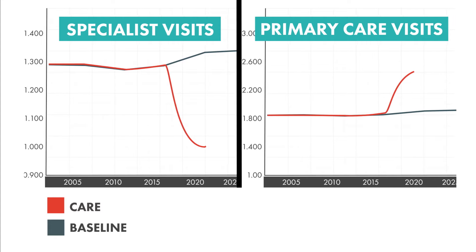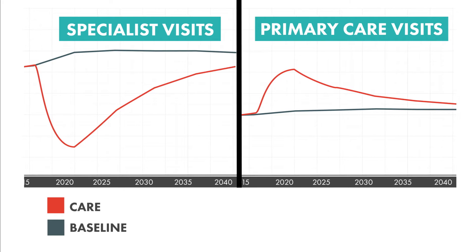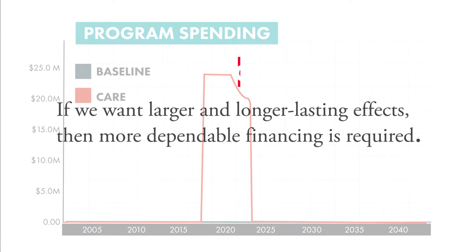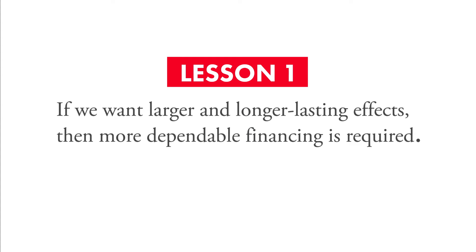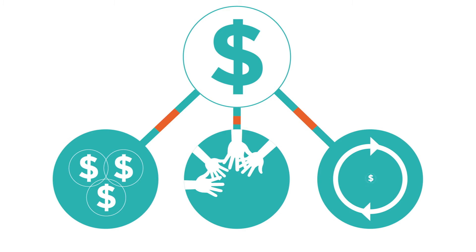But those early improvements do not last. The full pattern shows quick impact, followed by a sharp rebound. This signals an underlying problem: the collapse of program funding. After our initial five-year investment ends, the benefits of these reforms begin to erode. Our first lesson, therefore, is: if we want larger and longer-lasting effects, then more dependable financing is required. There are three ways to proceed: raise more external money, scale back the initiatives, or reinvest some of the gains to make the effort more self-reliant.